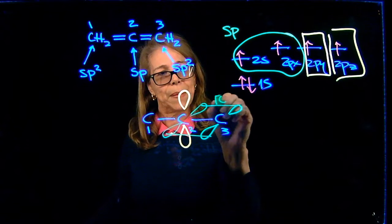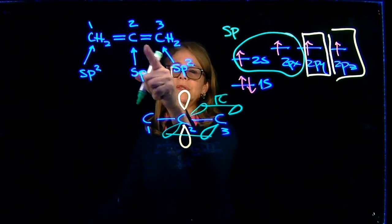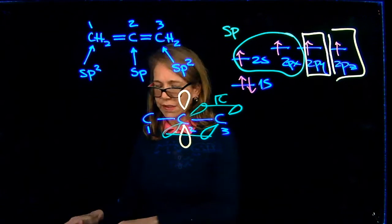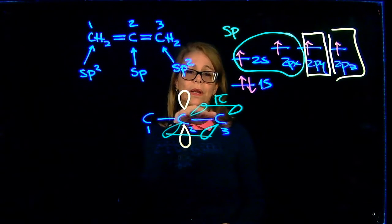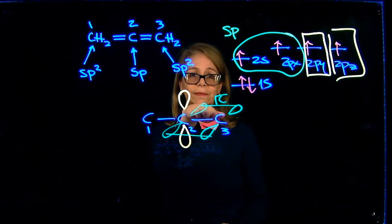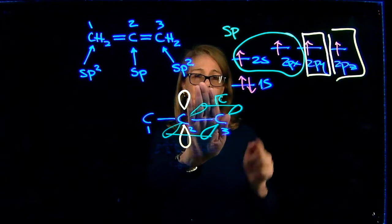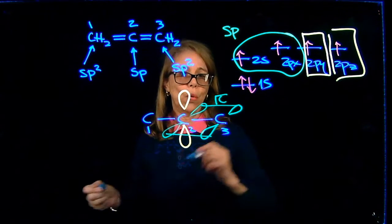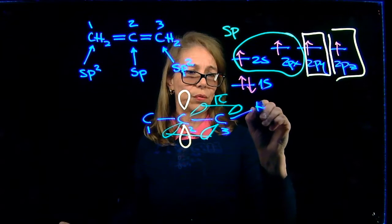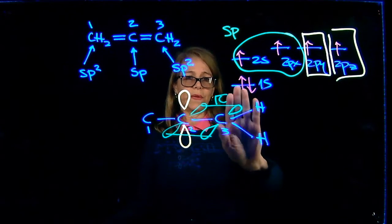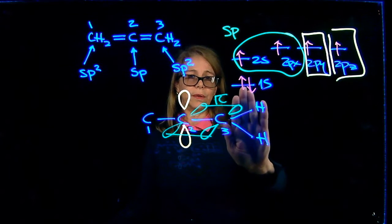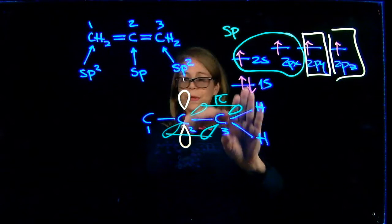Now we have a pi bond here between carbons 2 and 3. And because the pi bond is in this plane, it's drawn inclined, but it means that the orbitals are in this plane. Then I have two more bonds to the hydrogens, which are going to be in the plane of the board.